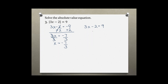On the right side, we again add 2 to both sides, leaving us with 3x equals 11. Dividing both sides by 3 gives x equals 11 over 3 as the second solution.